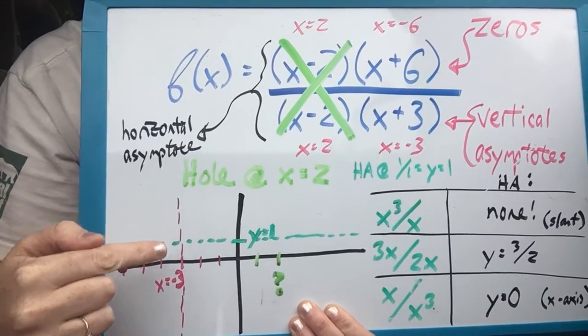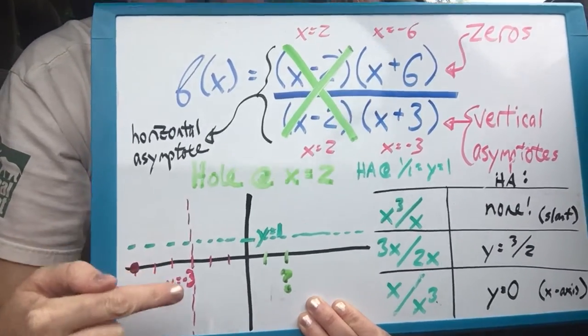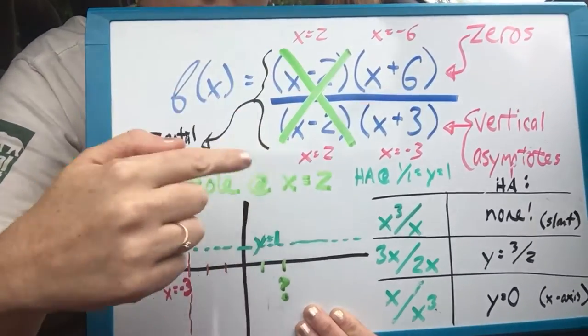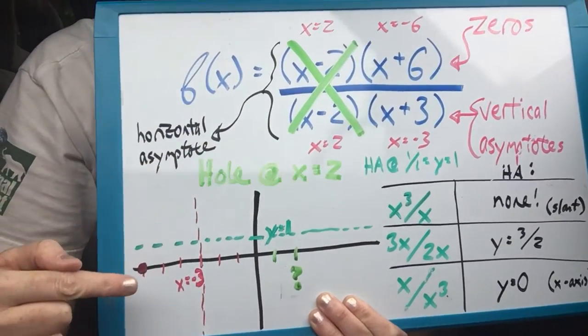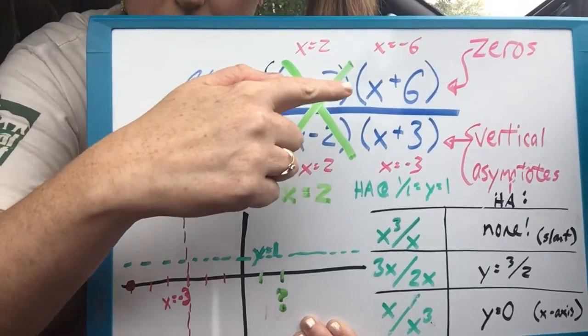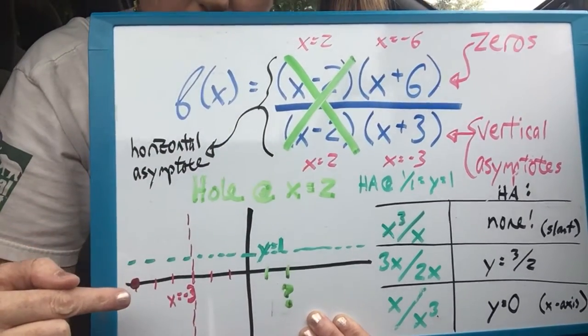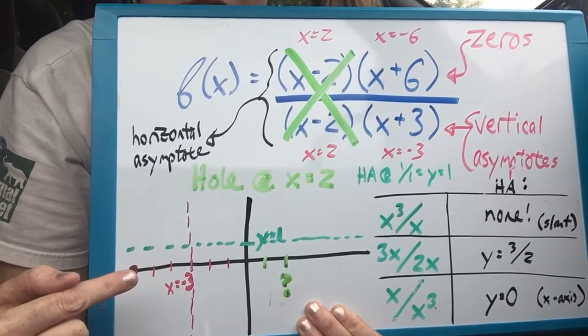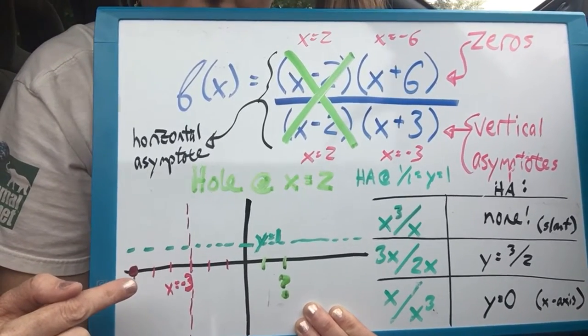Okay, and I still have the vertical asymptote at x equals negative 3 from what was up here left over from when I crossed out the hole. I still have this, and I still have my 0 from the top. I still have this x plus 6, so I still have a 0 at x equals negative 6. So that's my only tag to tell me where this graph is going to actually be.